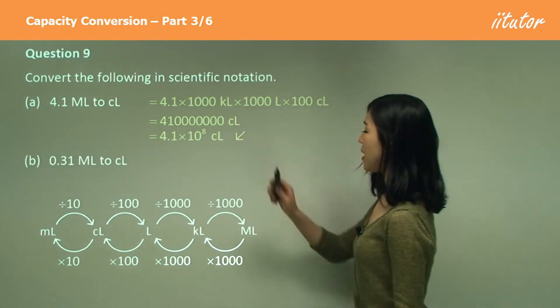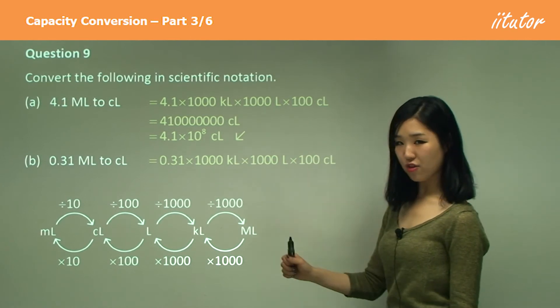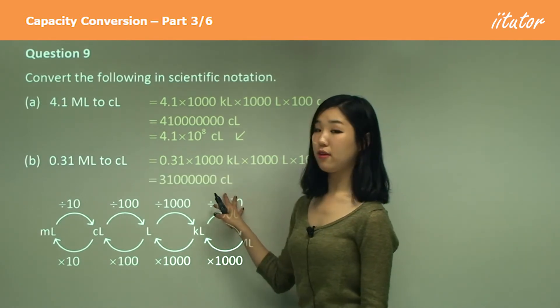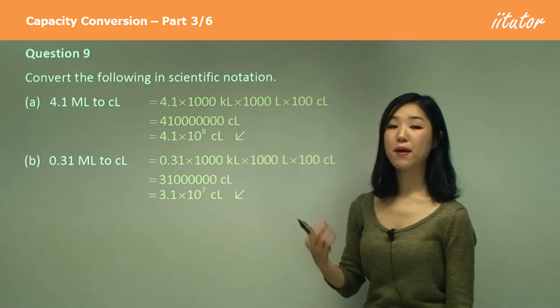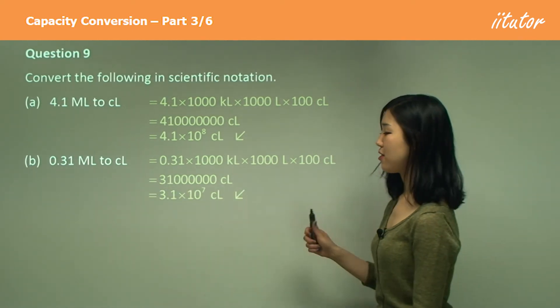Okay, the same thing: multiply by a thousand, thousand, then a hundred. So it's gonna look like this, that many zeros. And put the decimal there, should go to the right by seven decimal places. So 10 to the power of seven.